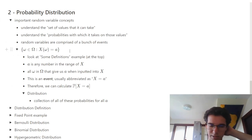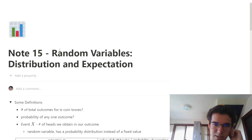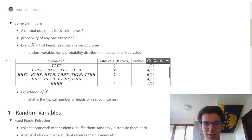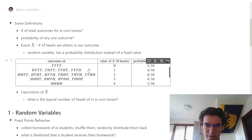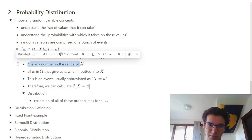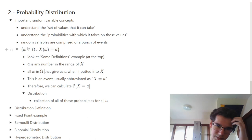This set notation here represents all of the sample points in our sample space such that the event maps to a specific value A. In the context of this problem — for example, we want the set of all sample points such that the value of X is 1, meaning the number of heads is 1. The set of all those sample points would be this row. A is any number in the range of X; all sample points that give us A when input into X form this set, and this is a specific event.